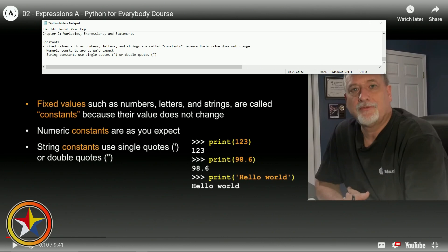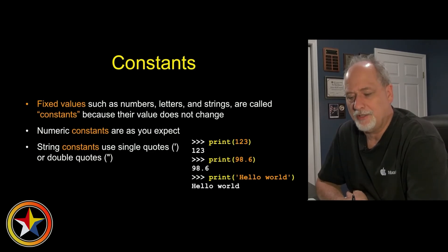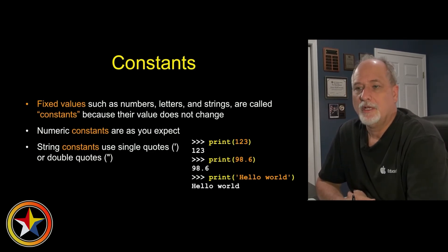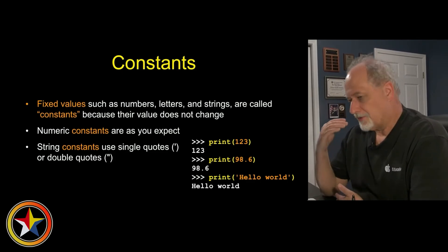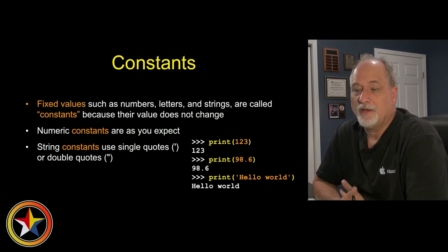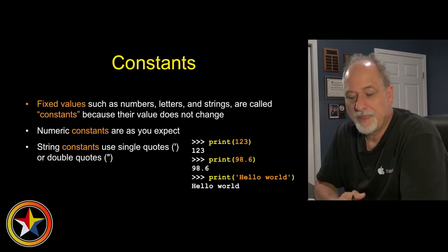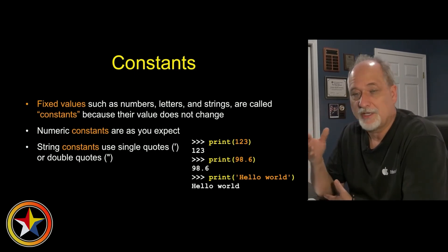So we've got: print 123 would print 123, print 98.6 would print 98.6, and print 'hello world' would print hello world. These are called constants because they don't change - they're numbers, strings, etc. We use them to start calculations, like if something is greater than 40 hours we'll do something - 40 is the constant in that situation.